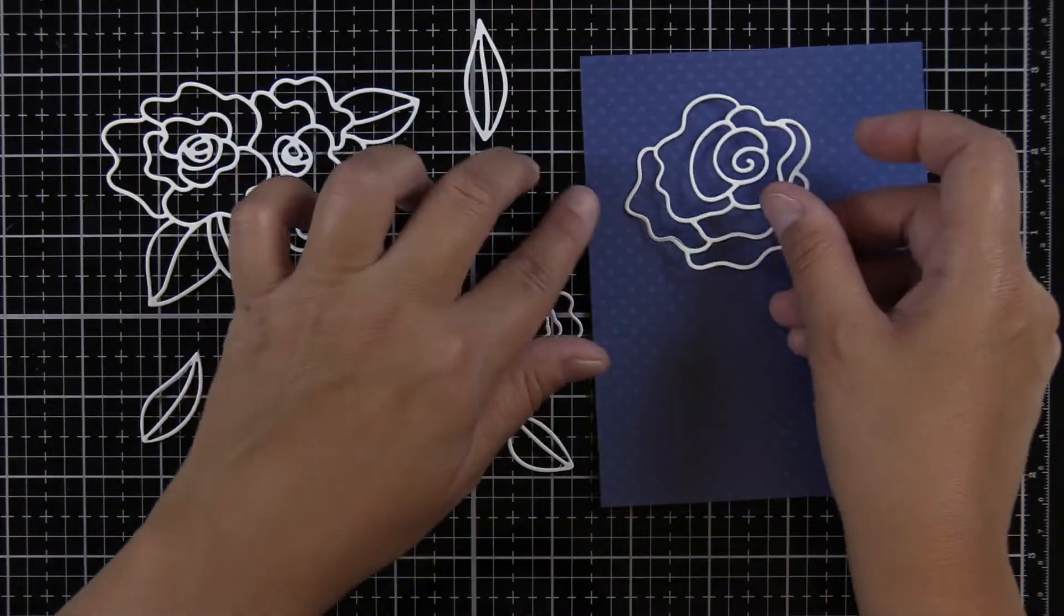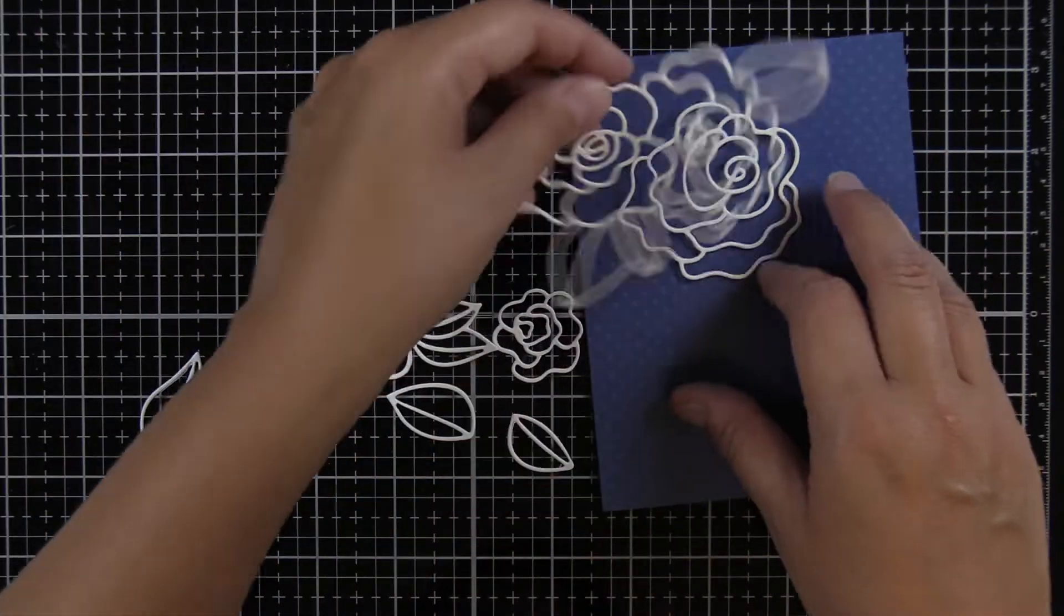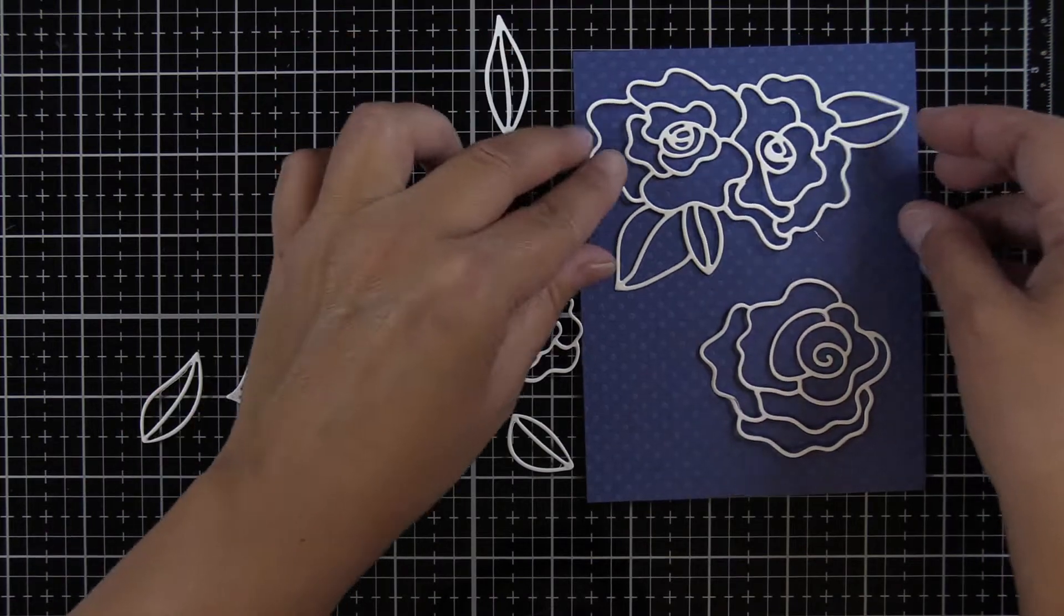This is Wavy Outlines die set from Altenew. This is a high quality steel die with eight images.